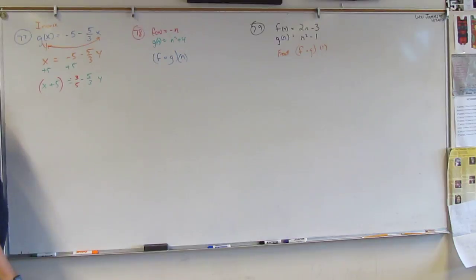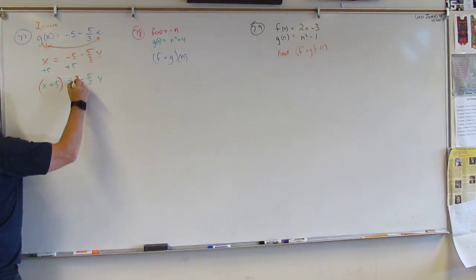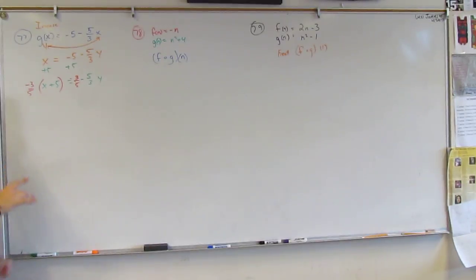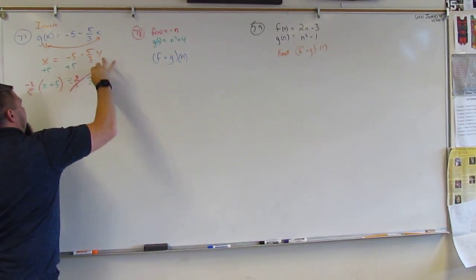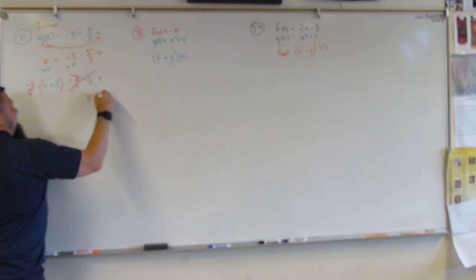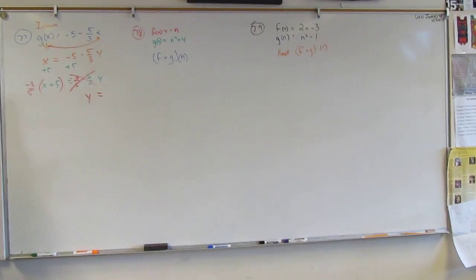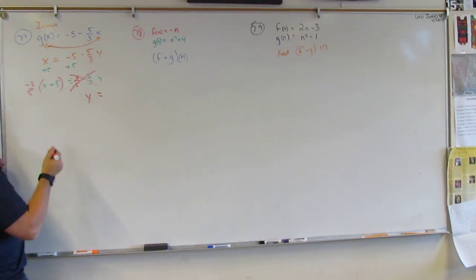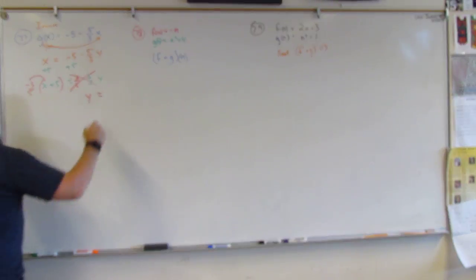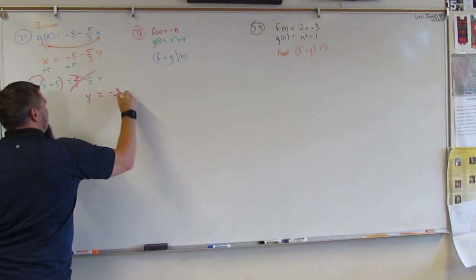Now this whole thing gets multiplied by that. By negative 3 over 5. And what that does is it cancels this out, right? Right. It just leaves a Y. Right.